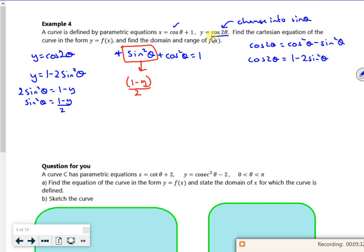And then if I look at the other bit, so the x = cos θ + 1, so x - 1 = cos θ. So then I'd replace that one with (x-1)² all squared. But it wants it in the form y =. So I'm going to do this then.